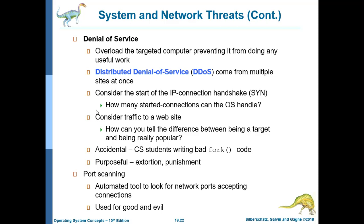DOS may be accidental — for example, a student writing bad fork function code. If purposeful, it can be used for extortion: the attacker threatens to keep flooding your server unless you pay a sum of money. Port scanning is also a double-edged sword — it can be used for both good and evil purposes.